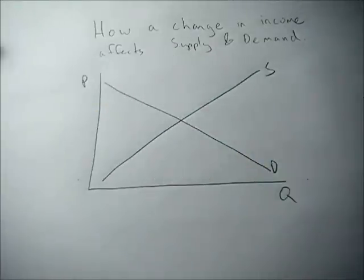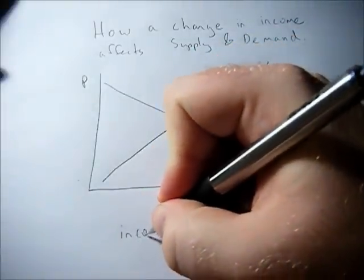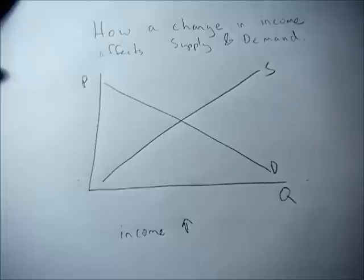This video explains how a change in income affects supply and demand. First, let's look at if income goes up. If income goes up, everything else equal, we should be able to afford more of a good.